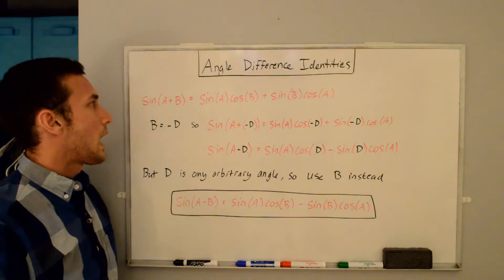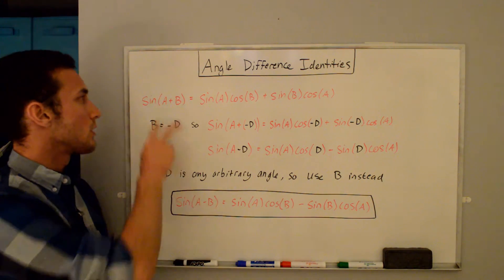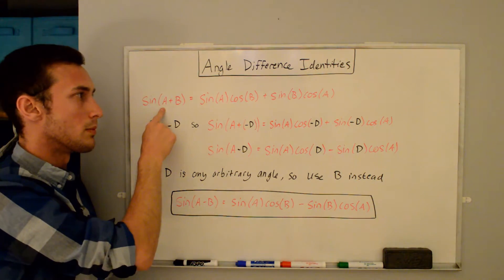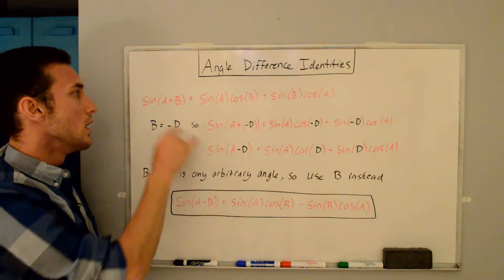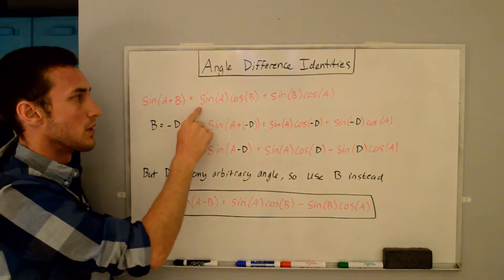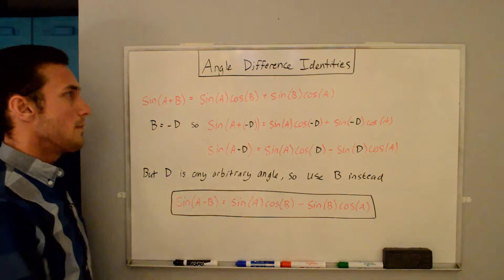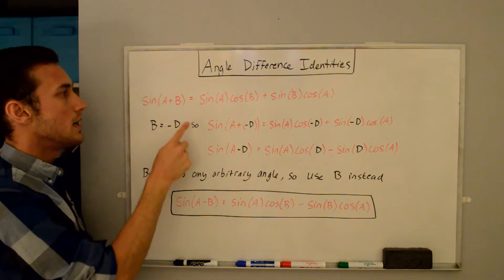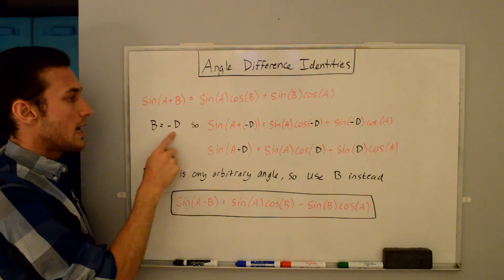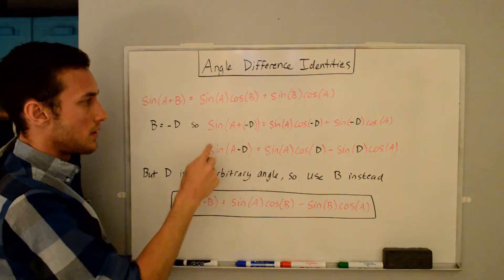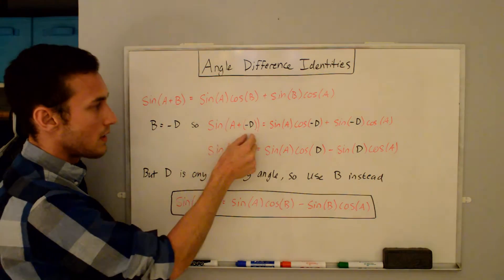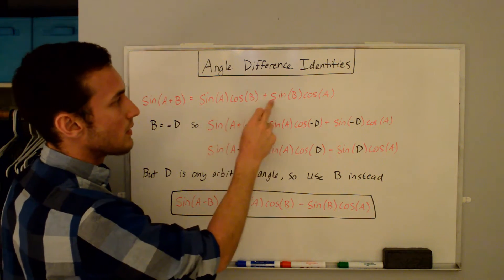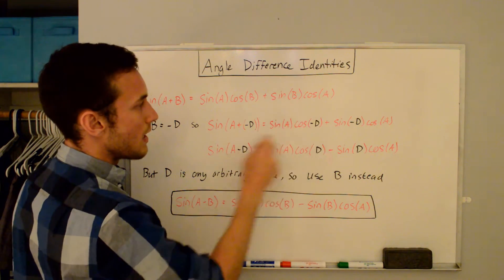I'm going to start with the sine angle difference identity first. The angle sum identity from my previous video is: sine of a plus b is equal to sine a cos b plus sine b cos a. Now let's substitute b equal to negative d, because we're trying to find sine of a minus b. Substituting into the b's gives us: sine of a plus negative d equals sine a cosine of negative d plus sine of negative d cosine a.